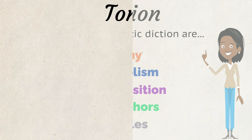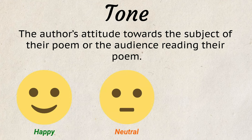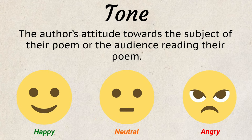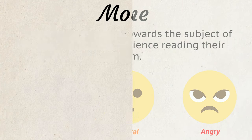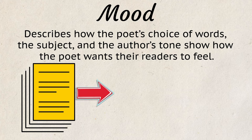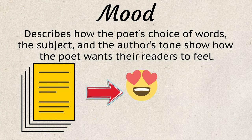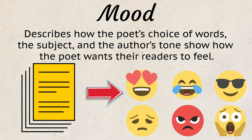The tone is the author's attitude towards the subject of their poem or the audience reading their poem. The mood of a poem describes how the poet's choice of words, the subject, and the author's tone show how the poet wants their readers to feel.